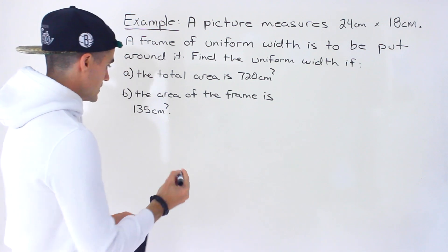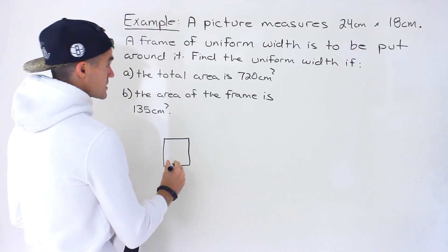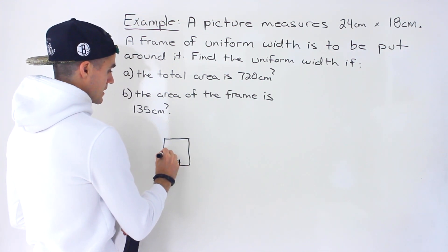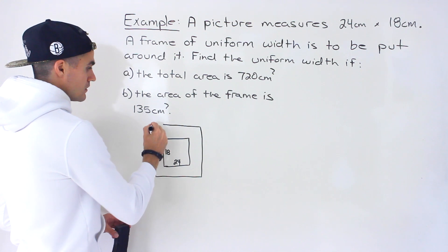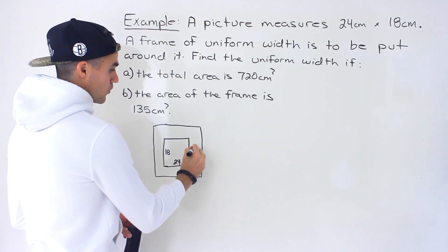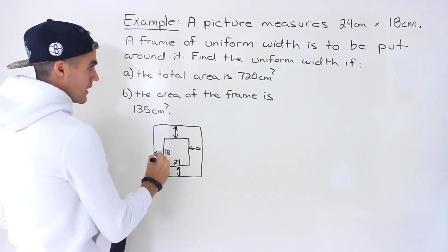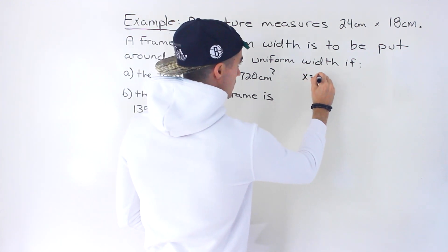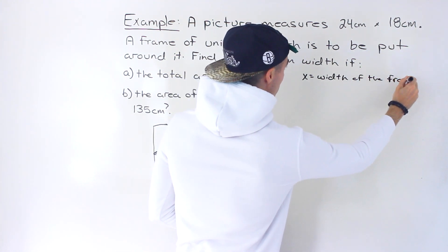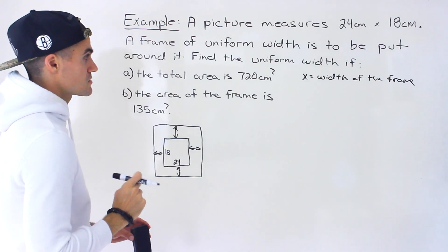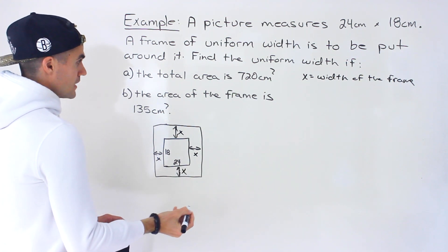Let's start off with a diagram. We have a picture that is 24 by 18 centimeters. We're putting a frame around it that has a uniform width, meaning the width all around is going to be the same throughout. I'm going to let x equal the width of the frame — that's what we're solving for in each scenario. So each side of the frame is labeled x.